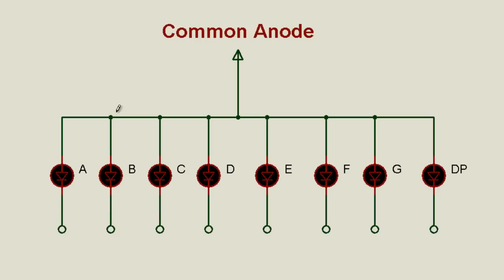To switch on a particular segment in common anode, we supply a zero to that specific cathode. For example, to switch on segment A — which already has a positive supply — I have to supply a zero from the microcontroller so that the circuit is closed from positive supply through the microcontroller to ground.